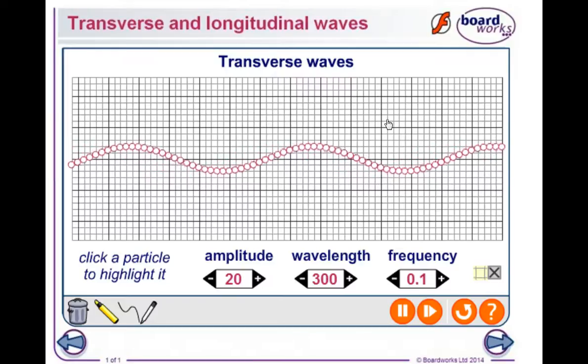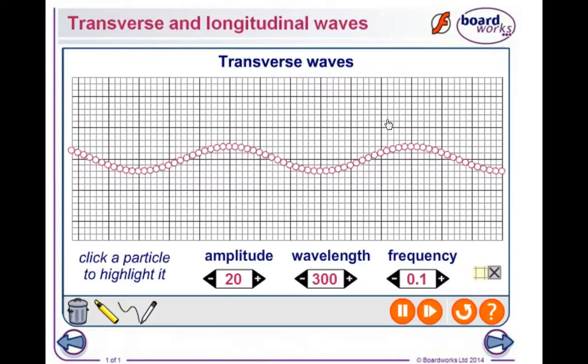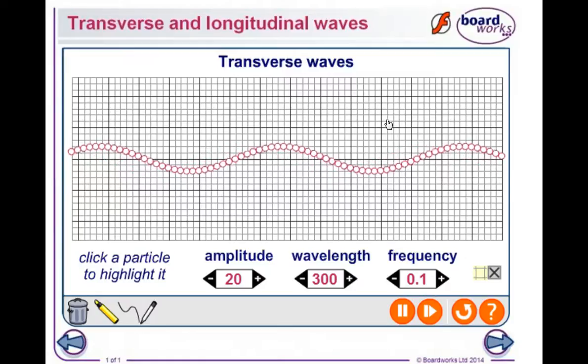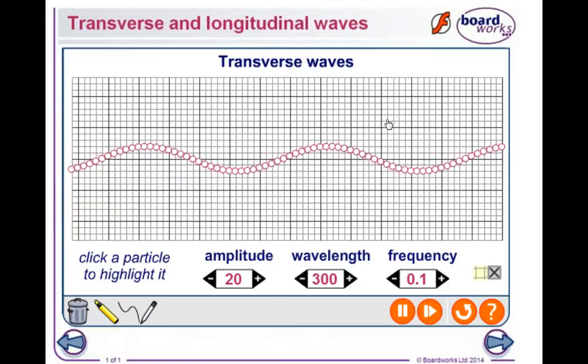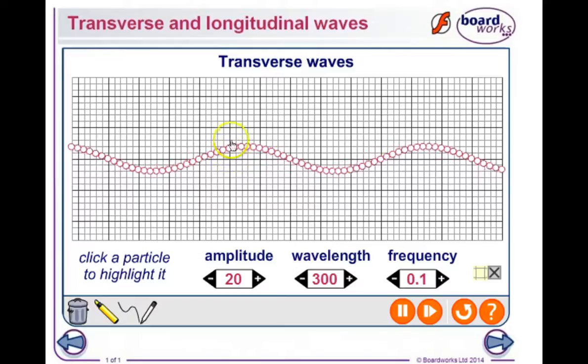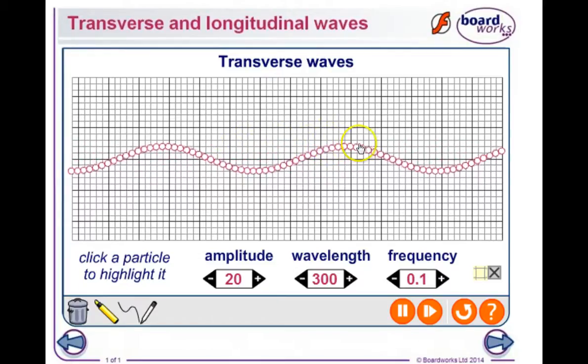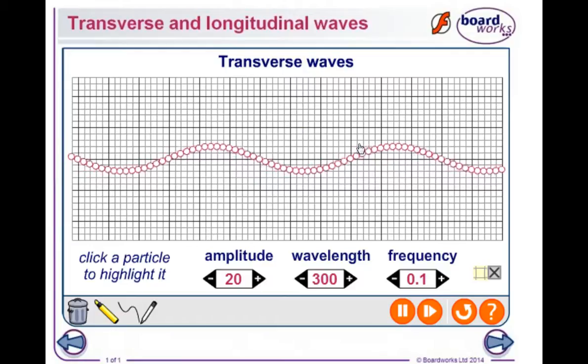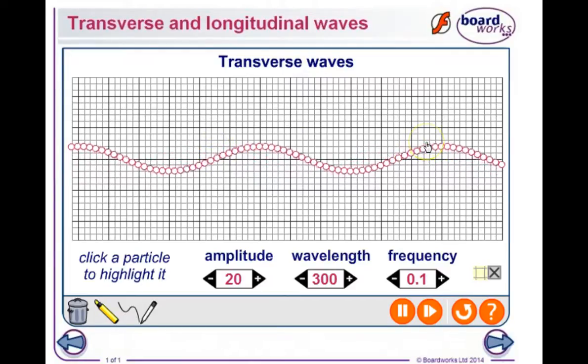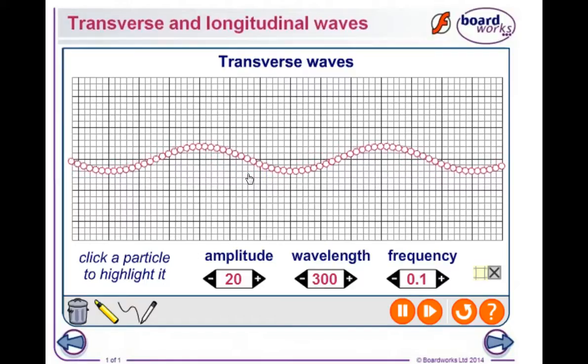A transverse wave is a wave in which the motion of the particles in the medium is perpendicular to the direction of travel of the wave. You can see that these are the little particles in the wave, and hopefully you can see that this wave is moving along here to the right. By the way, the top part of the wave is called the crest, and the bottom part of the wave is called the trough.